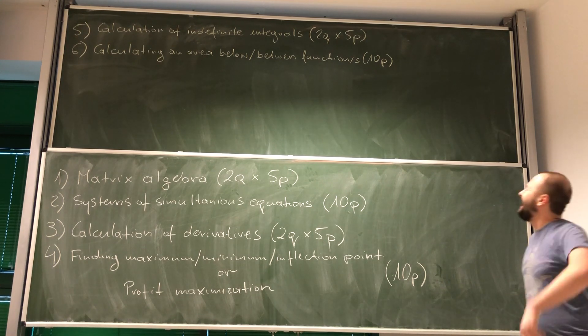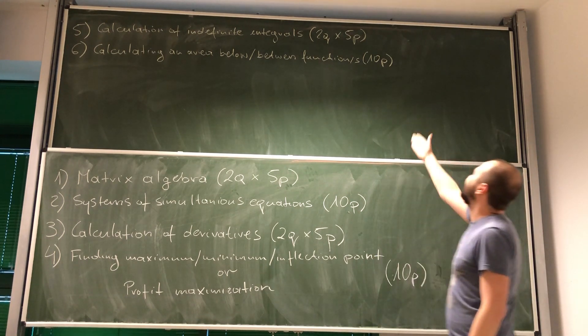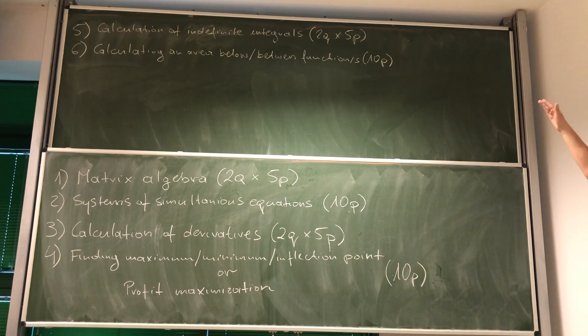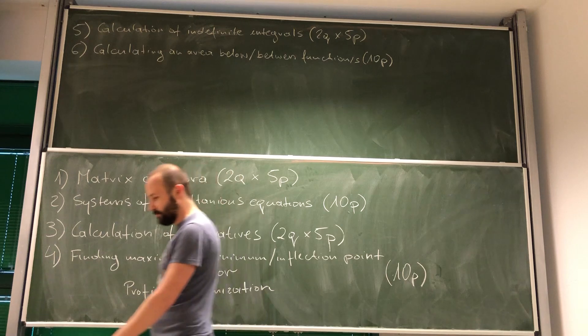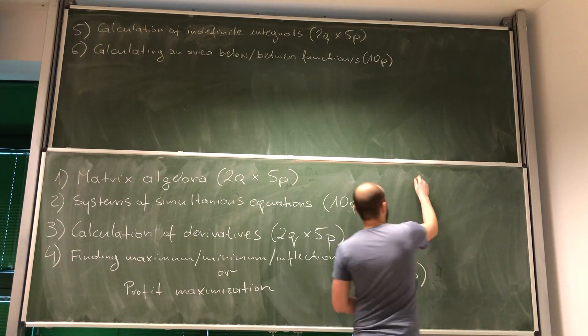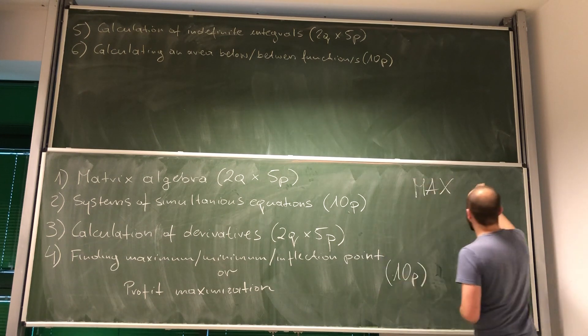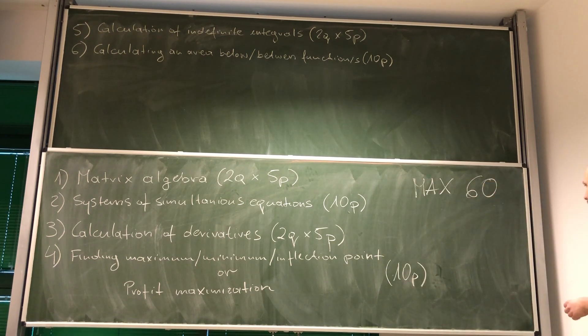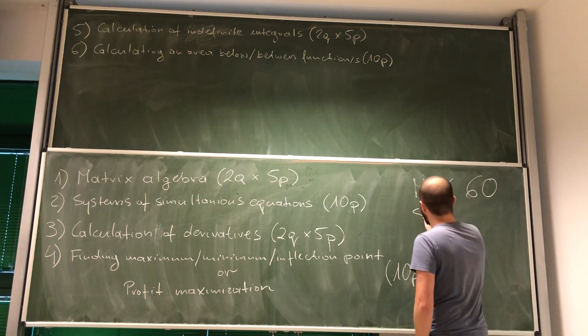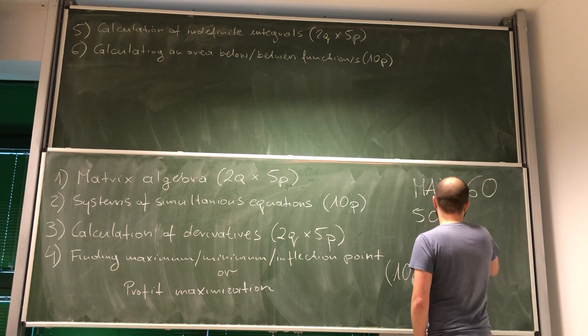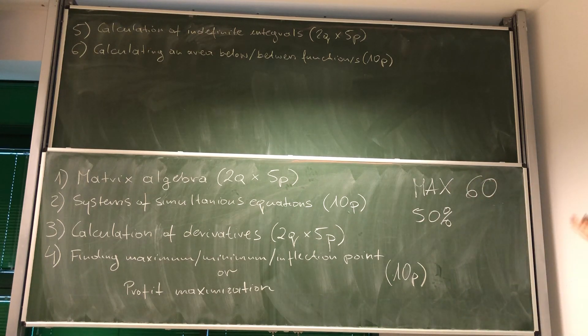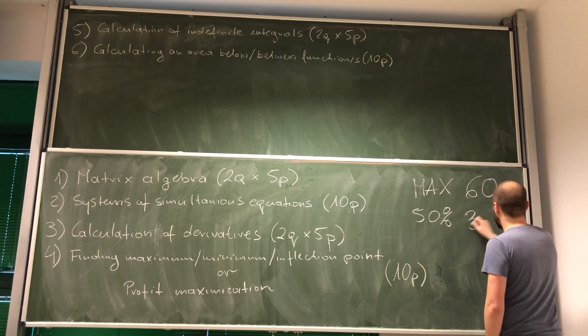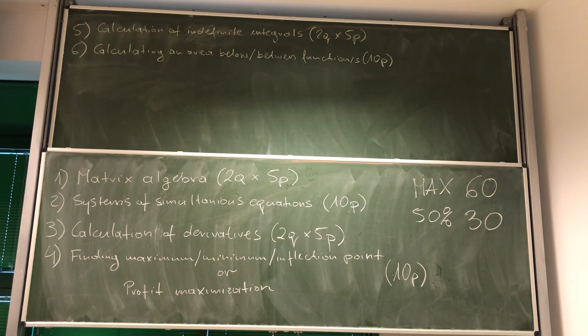Now I hope that you can see over here that in total you can get a maximum of 60 points. In order to pass, you need to have 50%, which I hope you understand is 30 points. If you have 30 points, you pass. If you have less, you fail.